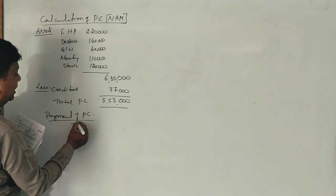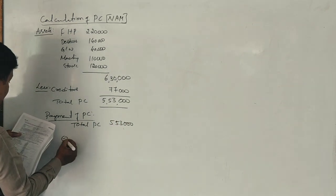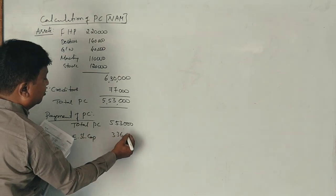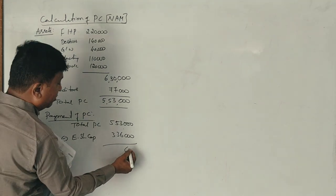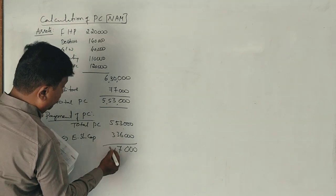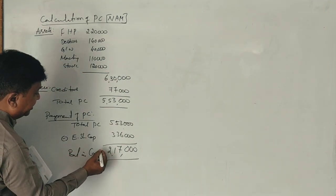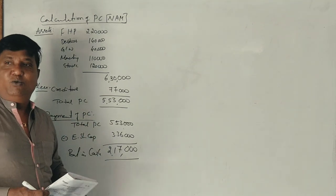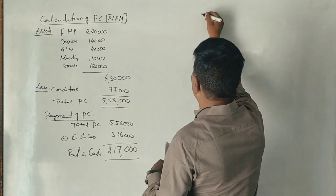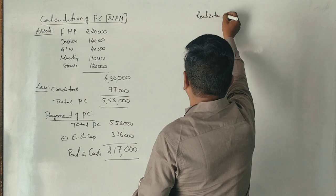Now, less creditors and loan: total PC is 5,53,000. Equity share capital is 3,36,000 rupees, and the balance in cash is 2,17,000 rupees. This is the realization account and cash account.